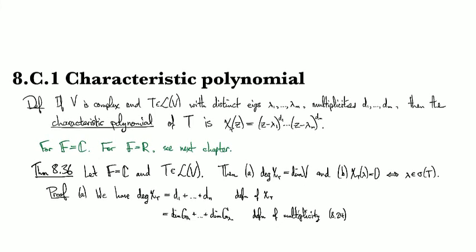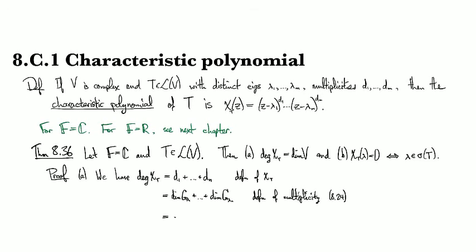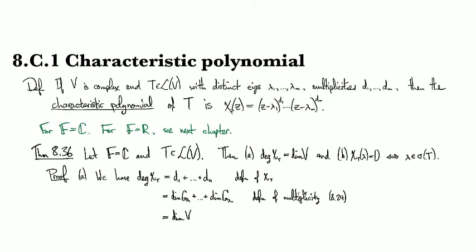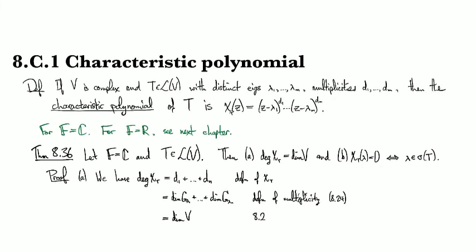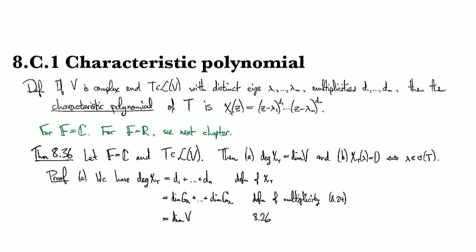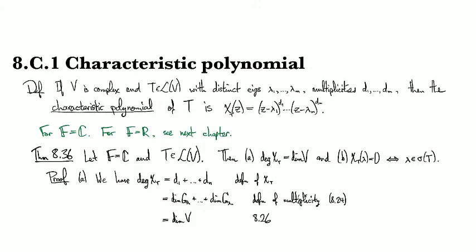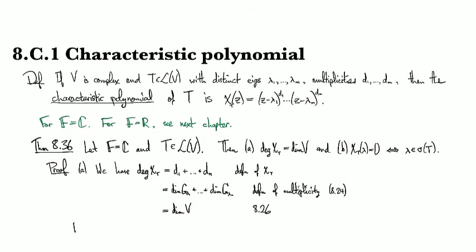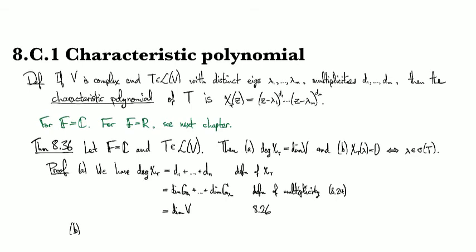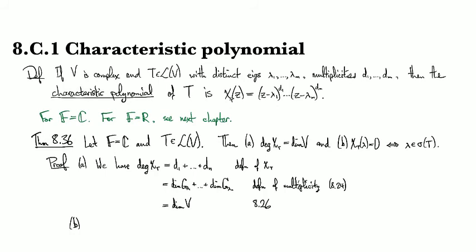This is equal to the dimension of V by the decomposition that we recently saw, that shows that V is the orthogonal direct sum of all the different generalized eigenspaces. For part B.